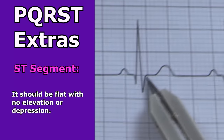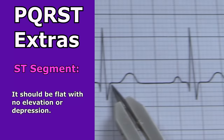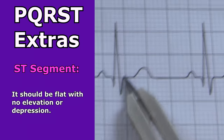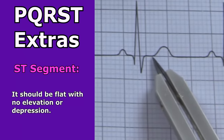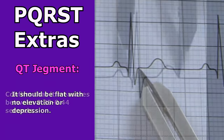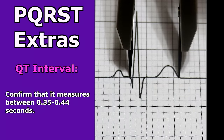Then look at the ST segment - it starts at the end of the S wave and stops at the beginning of the T wave. It should be flat, with no elevation or depression. And lastly, look at the QT interval, which starts at the beginning of the QRS complex and ends at the end of the T wave. Confirm that it measures between 0.35 to 0.44 seconds.